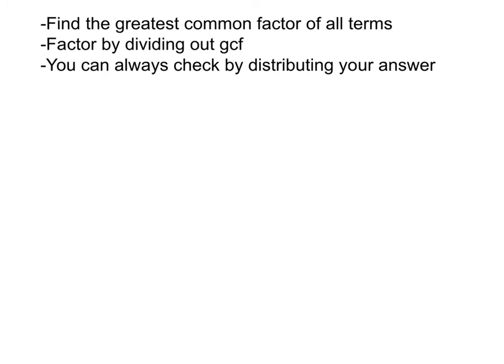So to factor using the distributive property, find the greatest common factor of all terms, factor by dividing out the greatest common factor, and once you have your answer, you always check by distributing it out and see if you get back to what you started with.